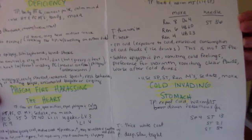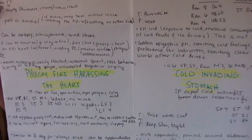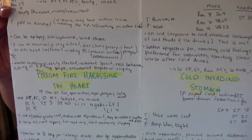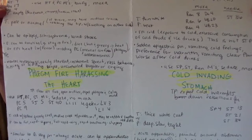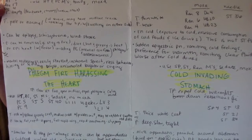Phlegm fire harassing the heart can be epilepsy, schizophrenia, windstroke. Ideology can be emotion, chi stagnation leading to fire. Can be due to diet, hot greasy foods leads to heat phlegm, or EPI heat with fever invading pericardium causing mental confusion and unconsciousness.